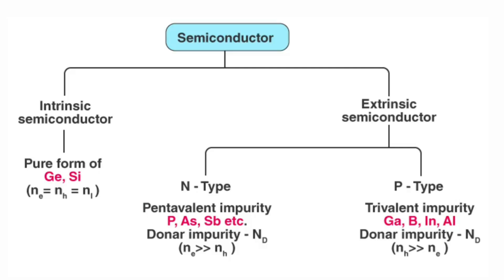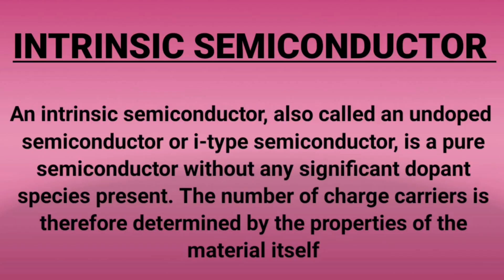Intrinsic Semiconductors, also called Undoped Semiconductors or I-type Semiconductors, is a pure semiconductor without any significant dopant species present. The number of charge carriers is therefore determined by the properties of the material itself.